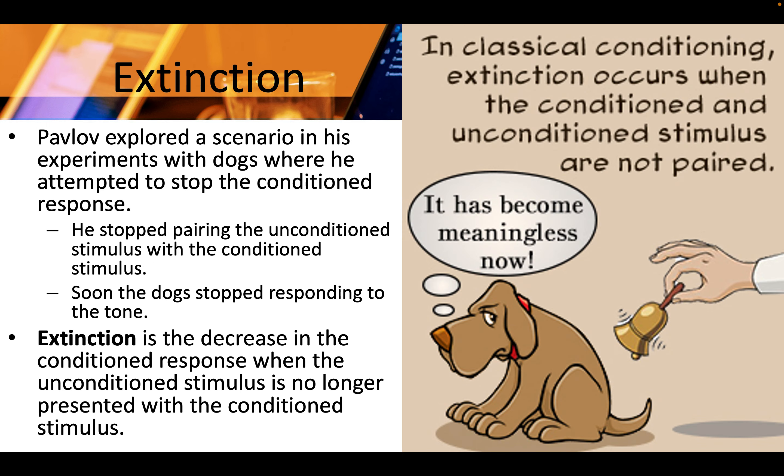Pavlov explored a scenario in his experiments with dogs where he attempted to stop the conditioned response. He stopped pairing the unconditioned stimulus with the conditioned stimulus. Soon the dog stopped responding to the tone. This is known as extinction — the decrease in the conditioned response when the unconditioned stimulus is no longer presented with the conditioned stimulus.